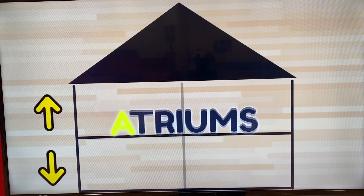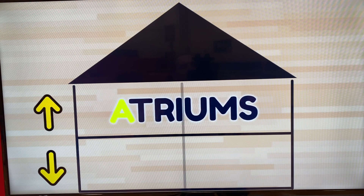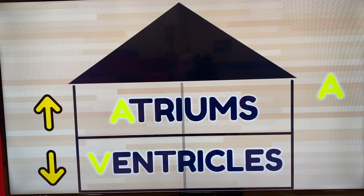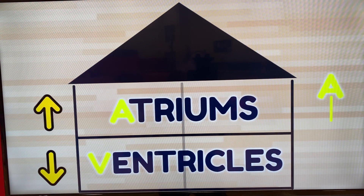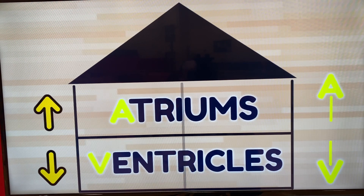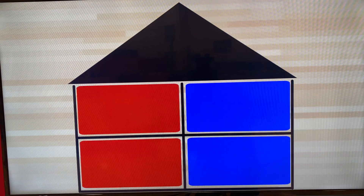The rooms that are upstairs are called atriums. We have a right and a left atrium. We also have a right and left ventricle. We remember A is pointing towards the top — it looks like an arrow pointing up, so atriums are at the top. V, the ventricle, looks like an arrow pointing down, so ventricles are at the bottom of the heart.